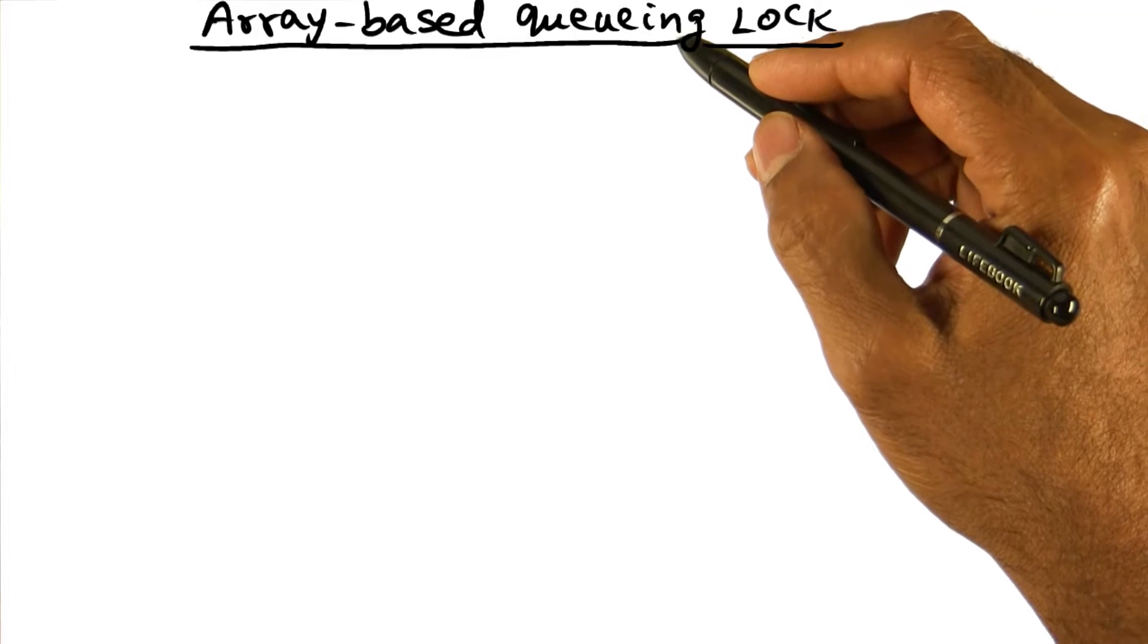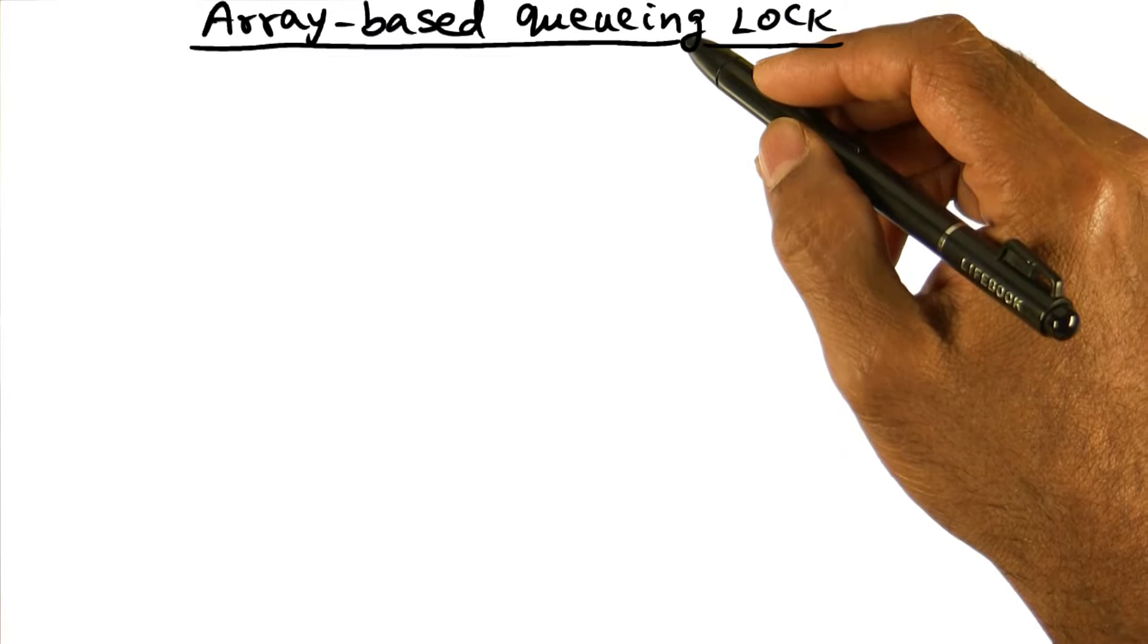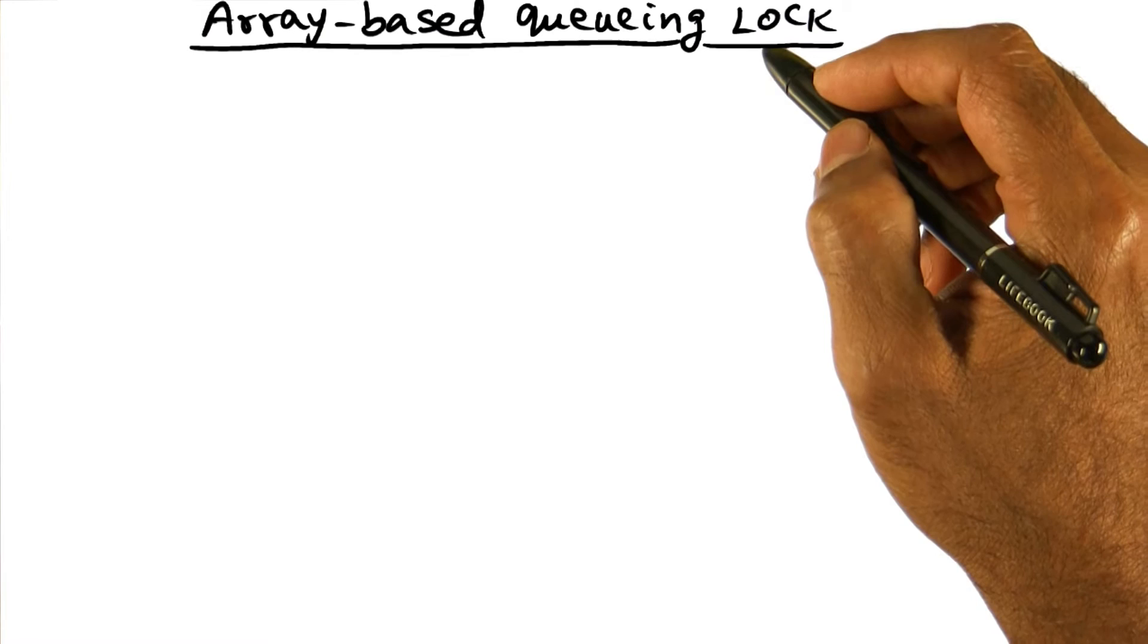We will discuss two different variants of the queuing lock. The first one we'll talk about is the array-based queuing lock. This is due to Anderson, and I'll refer to it as Anderson's lock later on as well.